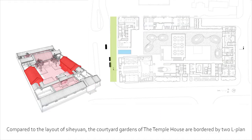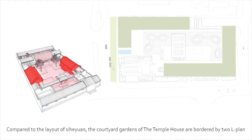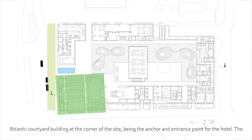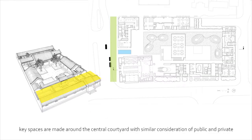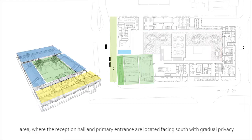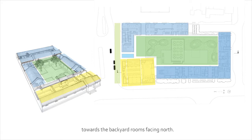Compared to the layout of zi-he-yuan, the courtyard gardens of Temple House are bordered by two L-planned medium-rise buildings serving as hotel rooms and apartments on the east and west. The bi-tie-shi courtyard building at the corner of the site serves as the anchor and entrance point for the hotel. Key spaces are arranged around the central courtyard with similar consideration of public and private areas, where the reception hall and primary entrance face south, with gradual privacy towards the backyard rooms facing north.